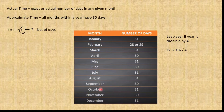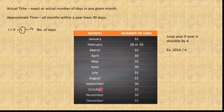Actual time is the exact or actual number of days in any given month, while approximate time means all months within a year have 30 days. There is a simple interest formula we will use.